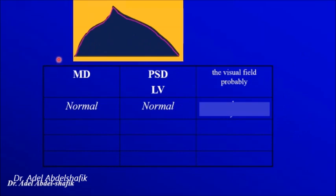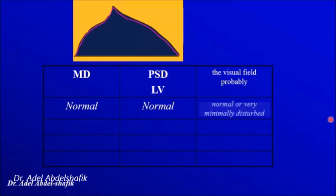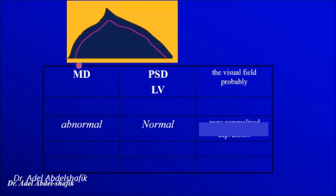In the first example, all points are close to normal, so the mean deviation is normal, and since all points are similar with no particular area markedly depressed, the standard deviation or variance is also normal — most probably you are dealing with a normal or minimally disturbed field. In the second example, all points are depressed equally and universally, so the mean deviation is affected while the standard deviation or variance remains normal — this means a pure generalized depression of the field.